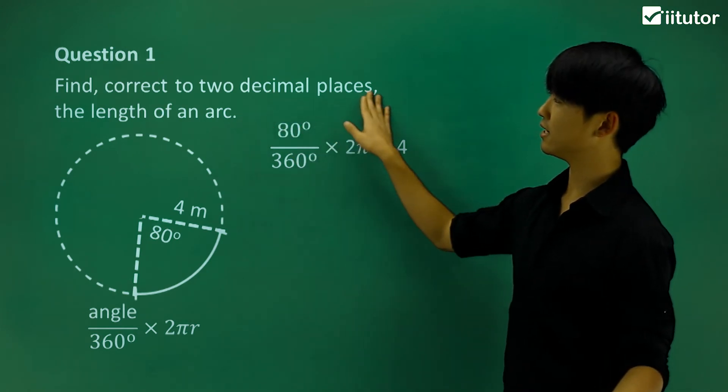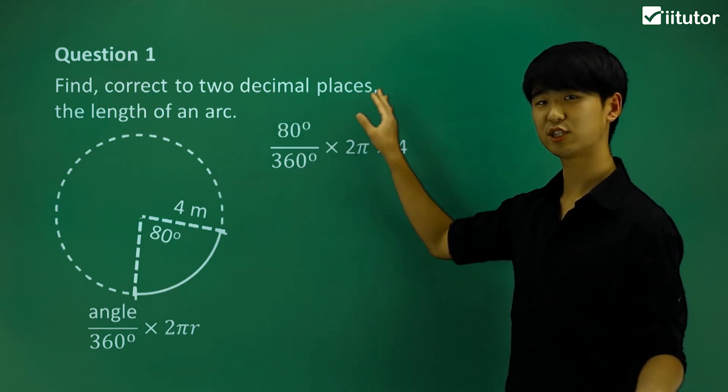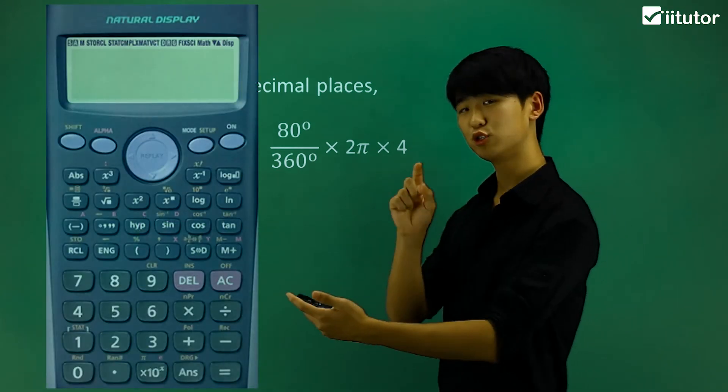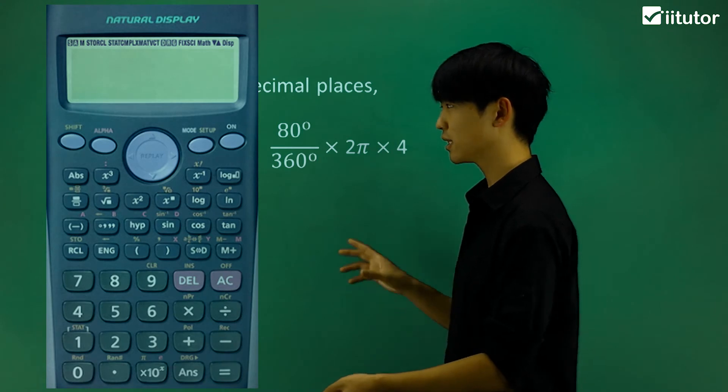Now because it says correct to two decimal places, let's just put all this into my calculator. So this is my calculator. I want you guys to try by yourselves as well and let's see if we get the same thing.